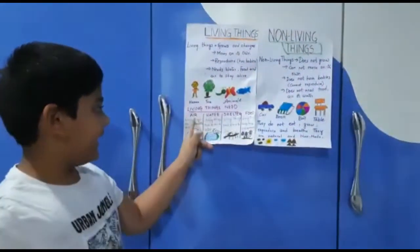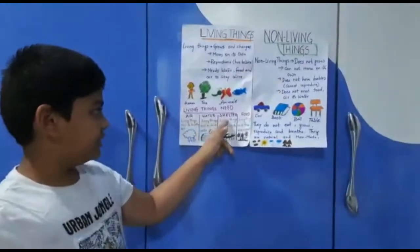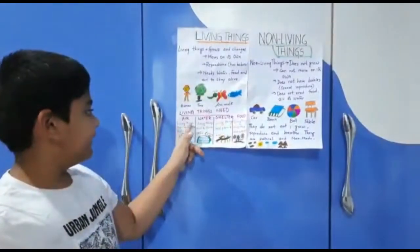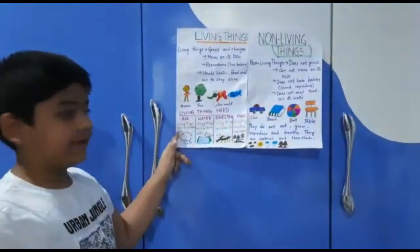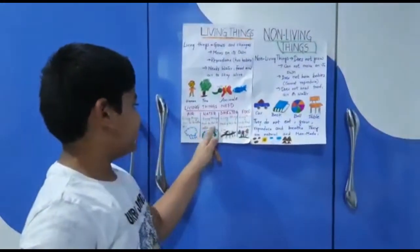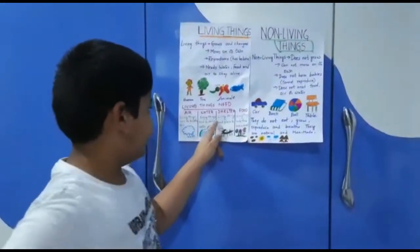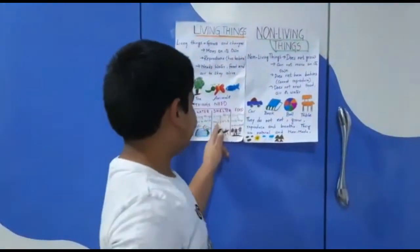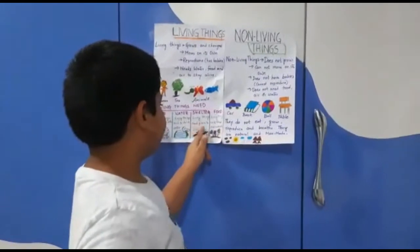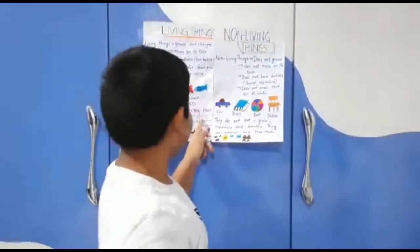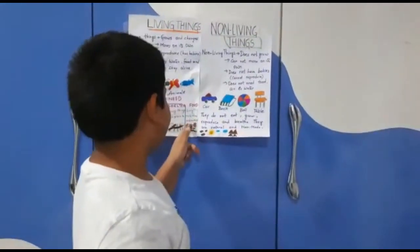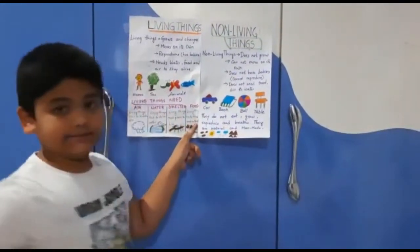Living things need air, water, shelter, and food. Living things need to breathe air. Living things need to drink water. Living things need a place to live. Living things need food and nutrients.